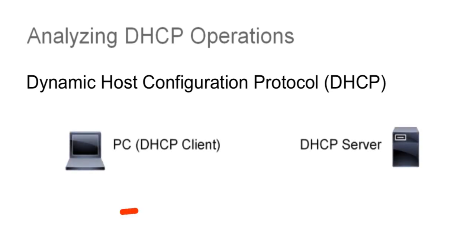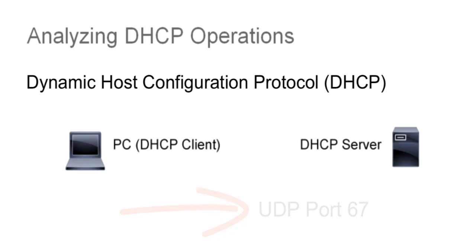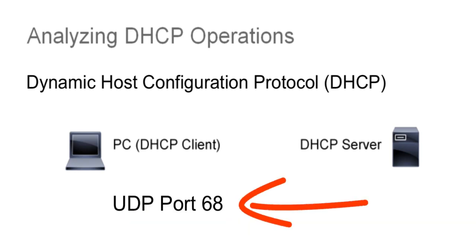DHCP uses UDP as the transport mechanism with UDP port number 67 as the destination port directed to the DHCP server. UDP port 68 is used by the DHCP client requesting the IP address.